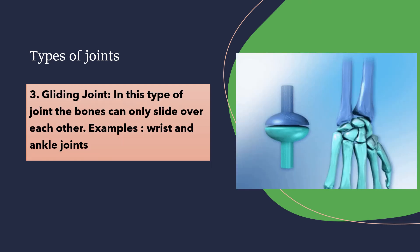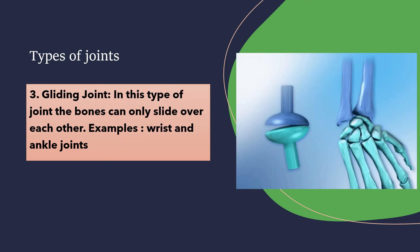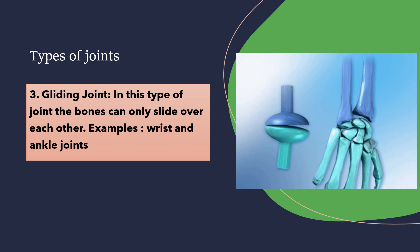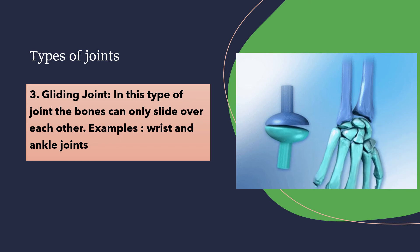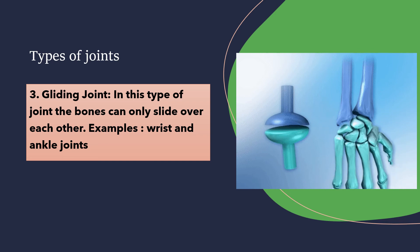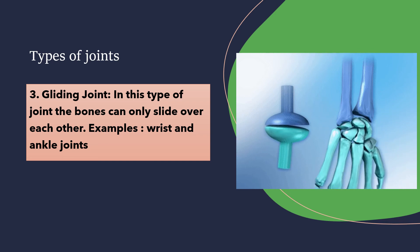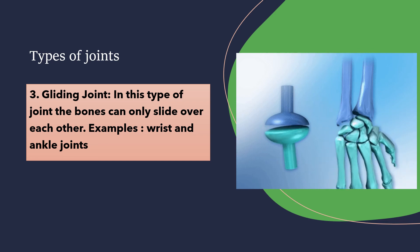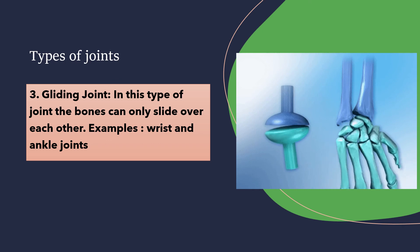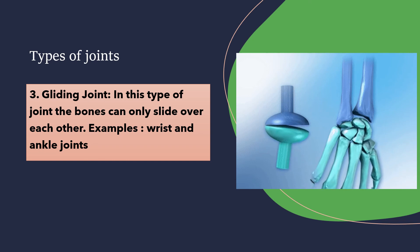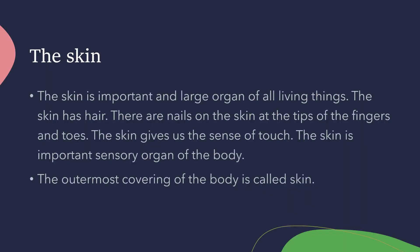The third type of joint is the gliding joint. In this type of joint, the bones can only slide over each other — they are just sliding over each other.